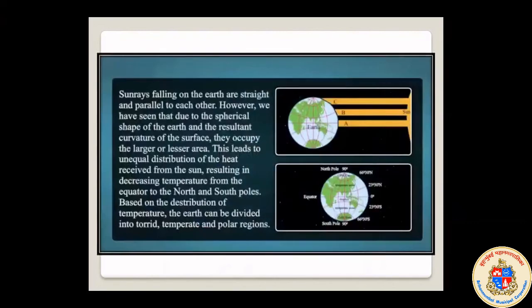Why did we learn this activity? Sun rays falling on the Earth are straight and parallel to each other. However, due to the spherical shape of the Earth and the resultant curvature of the surface, they occupy larger or lesser areas. This leads to the unequal distribution of heat received from the sun, resulting in decreasing temperature from the equator to the North and South Poles. Based on the distribution of temperature, the Earth can be divided into three types: torrid, temperate, and polar regions.